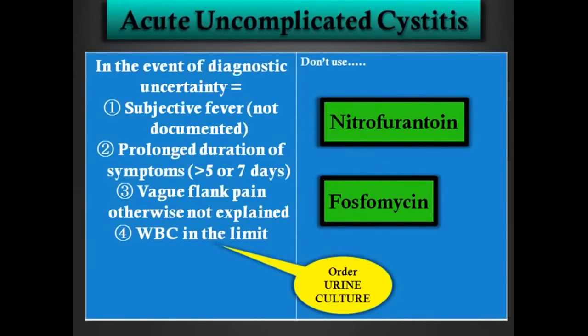Sometimes a patient comes to the emergency department with burning, malaise, fatigue, some abdominal pain, subjective fever, prolonged duration of symptoms more than five to seven days, flank pain, and white cells at the limit — around 10,000–11,000. You're not sure if it's lower or upper tract infection. Of course, in this case you would order a urine culture because you're considering the worst scenario. In this case you cannot use nitrofurantoin or fosfomycin if you're thinking of an upper UTI, because tissue penetration of these drugs is poor — they are only for lower urinary tract infections, for cystitis.